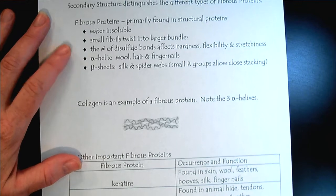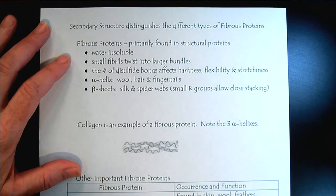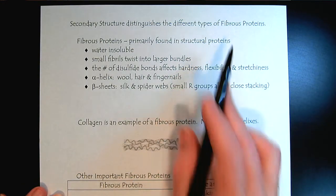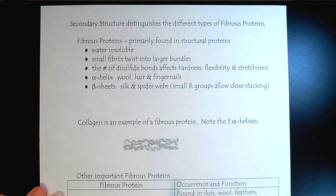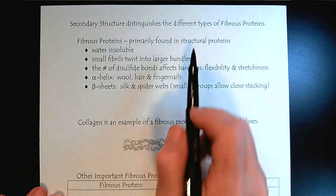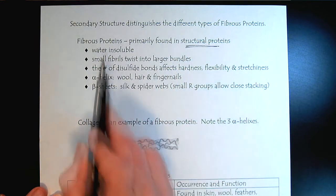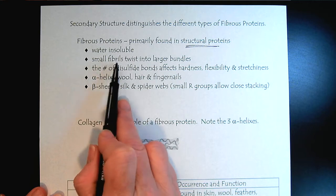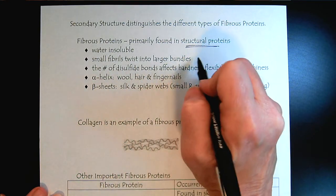What we'll see is that the secondary structure distinguishes several different types of fibrous proteins. For example, fibrous proteins, we'll see, are structural proteins.